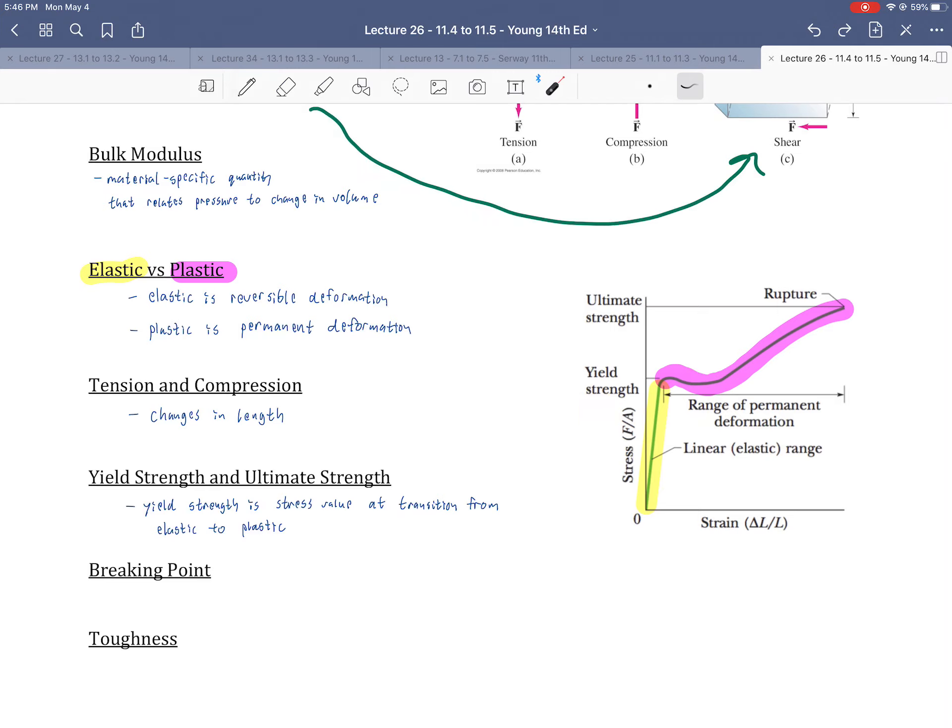That's yield strength and ultimate strength. Yield strength is a stress value at transition from elastic to plastic. So yield strength would have the units of the vertical axis, which have units of stress. Do notice that the units of stress are the same as the units of the moduli. That's because the slope, rise over run, is just stress over something that has no units.